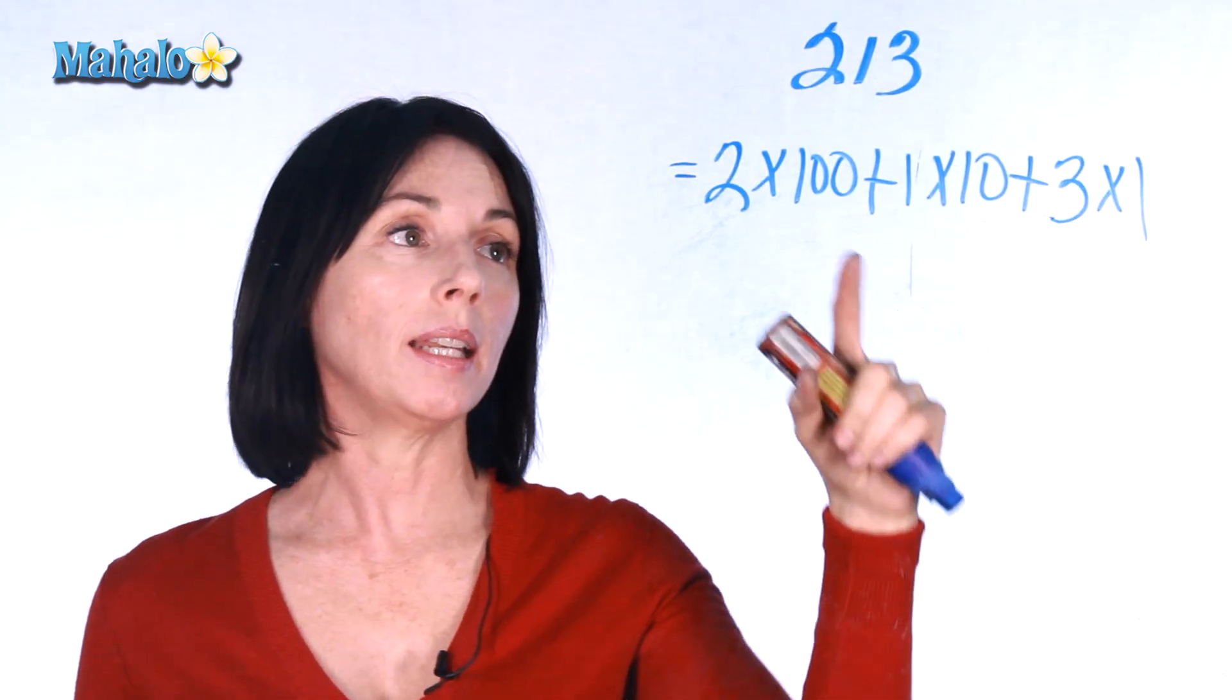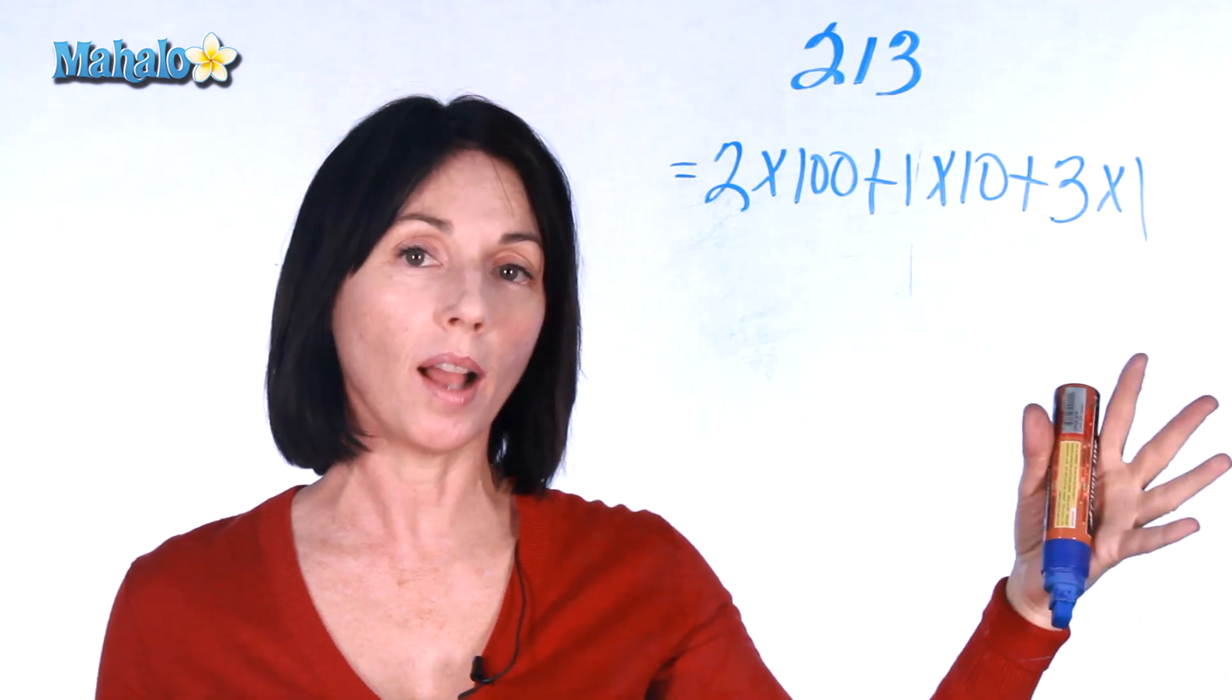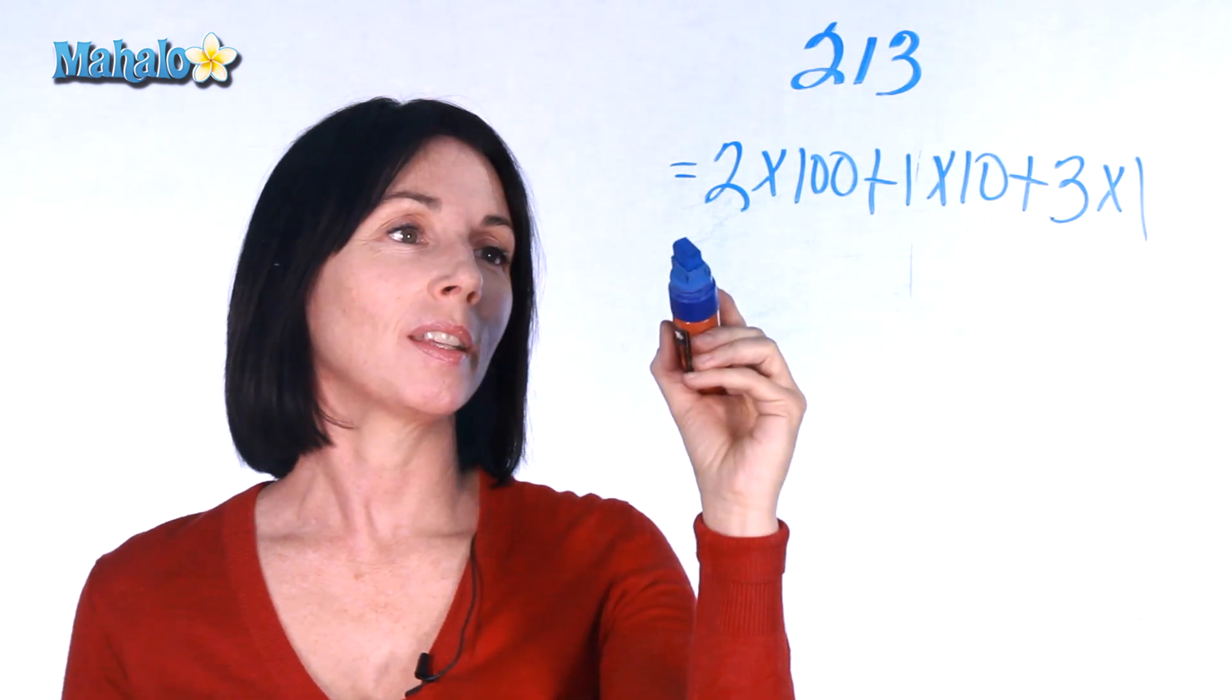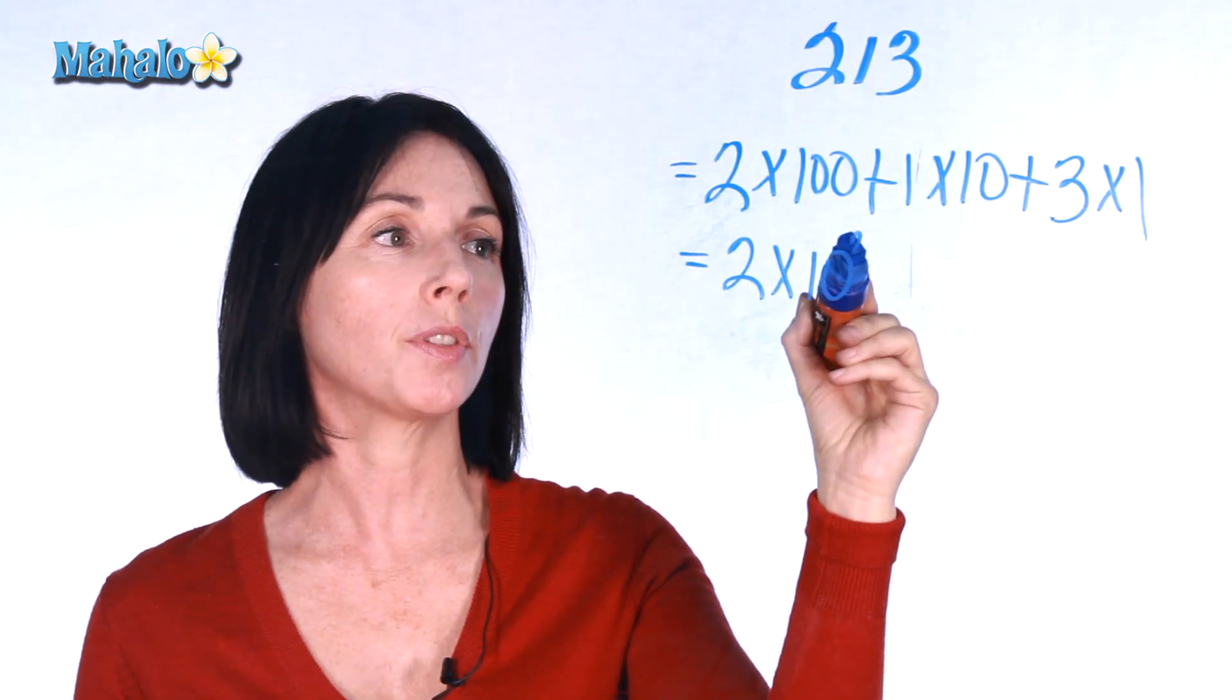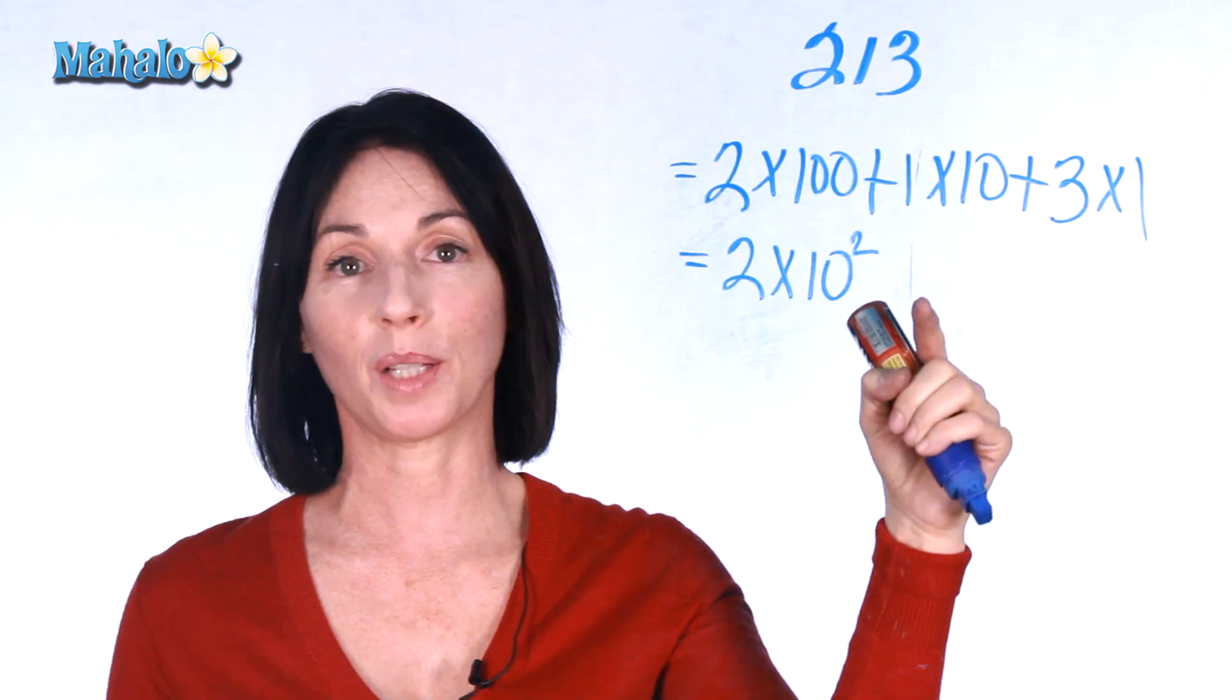Now instead of writing 10, 100, and 1, we can rewrite this using exponents. So this is equal to 2 times 10 to the power of 2. We have two zeros so we have an exponent of 2.